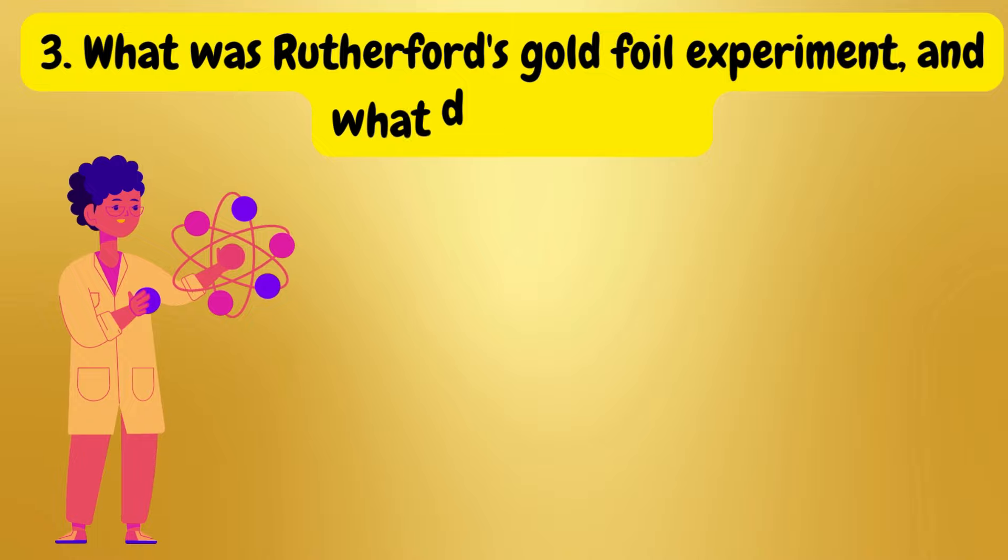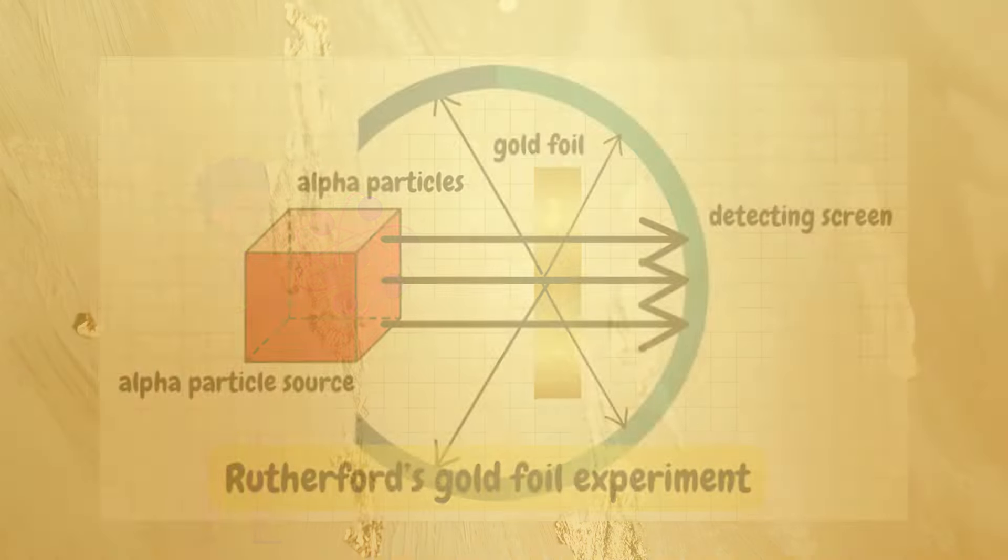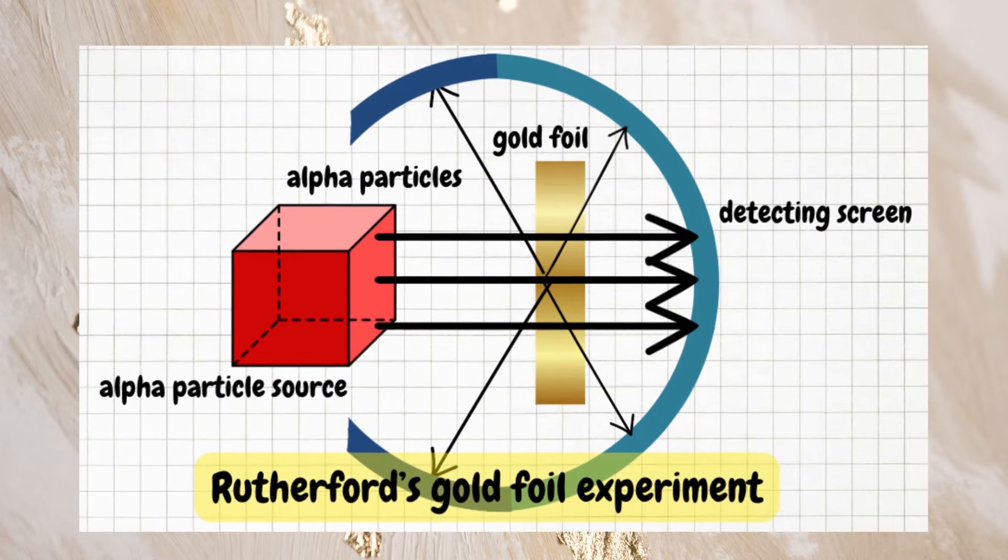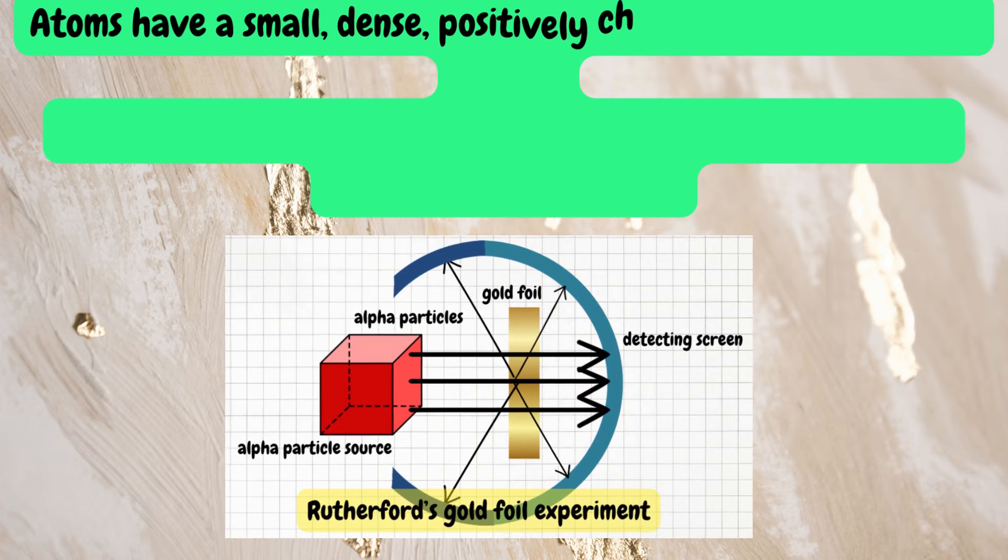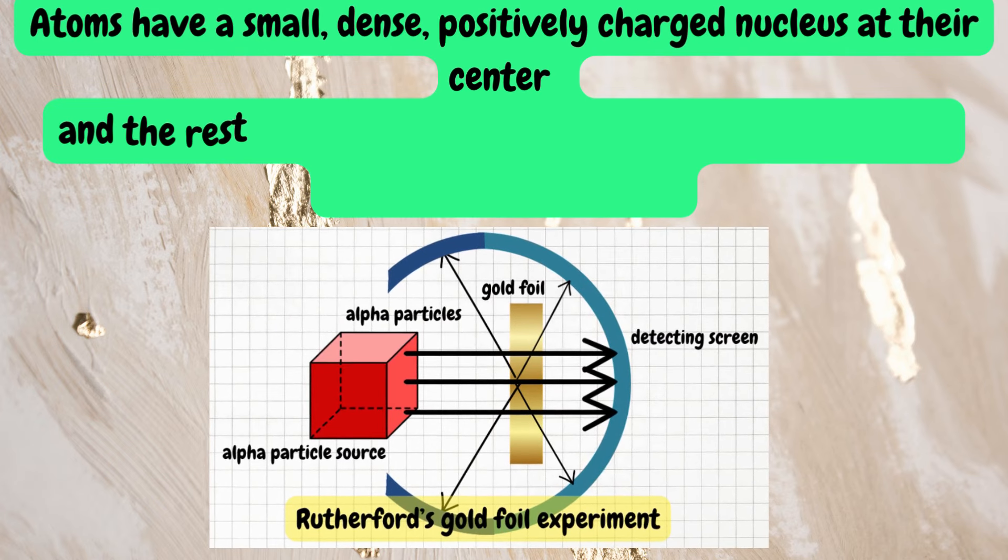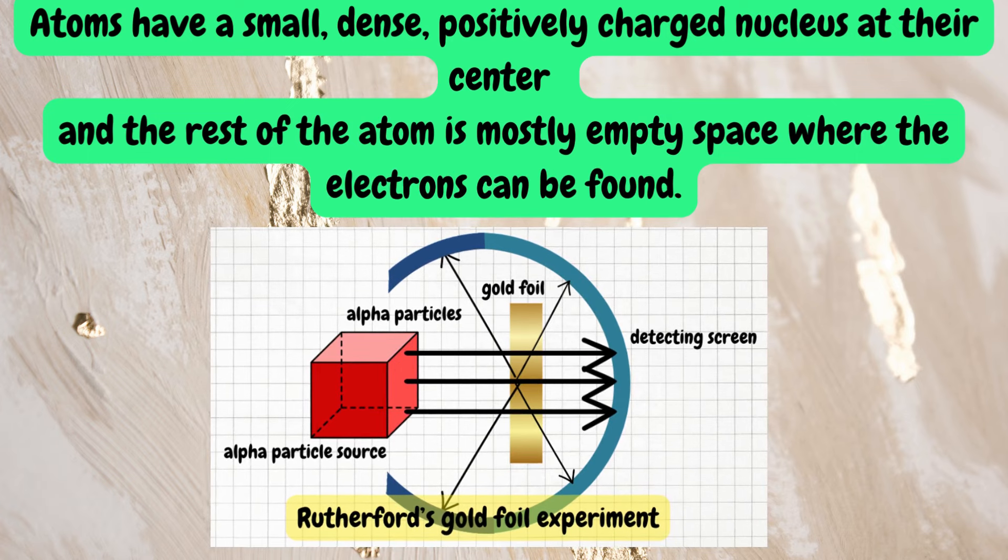Question three: What was Rutherford's gold foil experiment and what did it reveal? Rutherford's gold foil experiment involved shooting alpha particles at gold foil. It revealed that atoms have a small, dense, positively charged nucleus at their center, and the rest of the atom is mostly empty space where the electrons can be found.